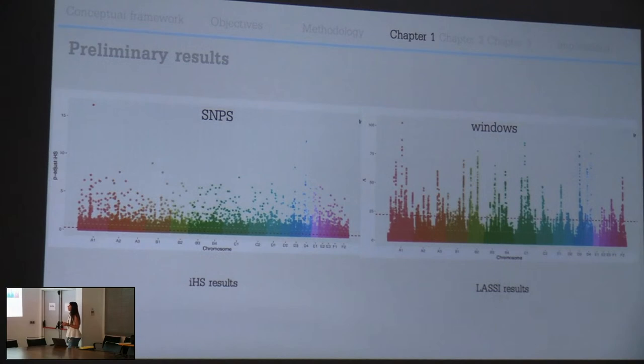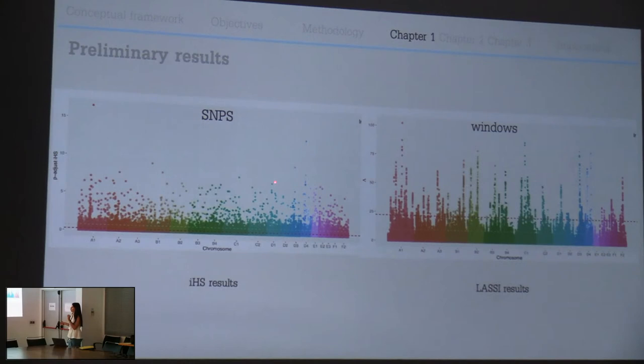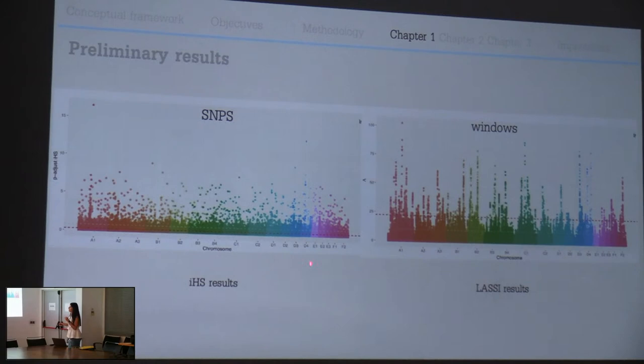What we have here is genome positions on the x-axis, from chromosome A1 to chromosome F2, and on the y-axis the scores of two different methods. One method looks at individual SNPs while the other looks at genome windows of 100 variants. From these methods I want the outliers - I cut off and extract the extreme values of the distribution. I did a double-check to avoid false positives, only considering regions that are positive outliers for both methods.